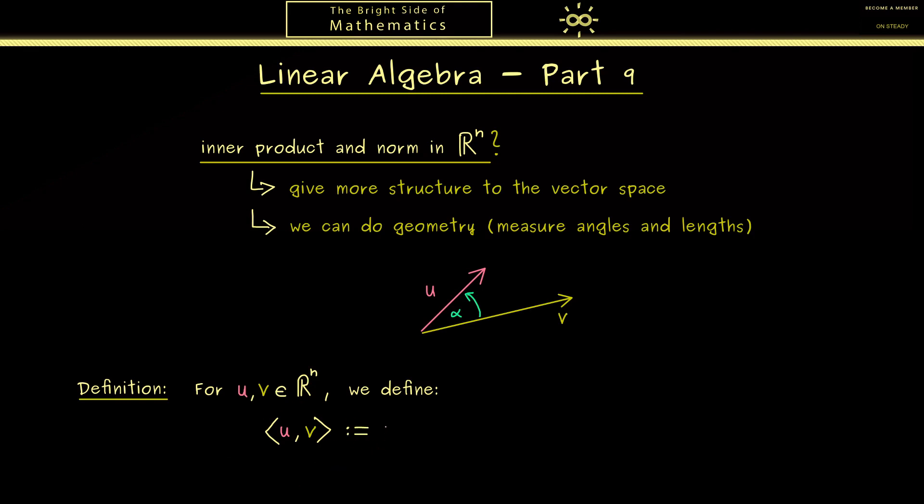You recall from the third part for R^2 that we have u_1 times v_1 plus u_2 times v_2. So you see here we have the first two components of the vectors u and v. However now we could have more components and therefore we have to add all these products then. So the last one would be u_n times v_n. And there we have it, this is the definition of the standard inner product in R^n.